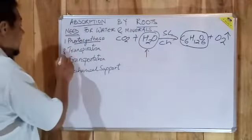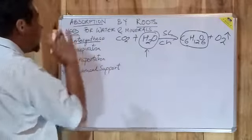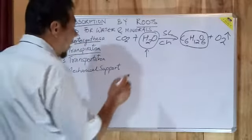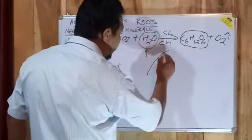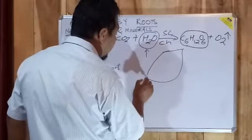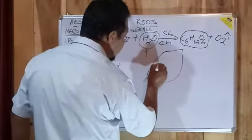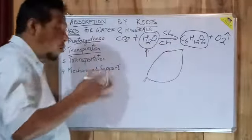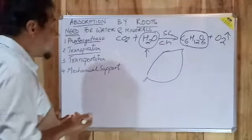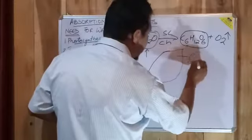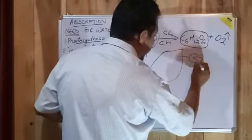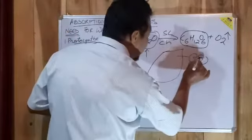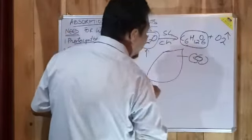Second point is there is a need for absorption of water for transpiration. Now what is transpiration? When you look at the leaf of a plant, when you turn it upside down, you may have seen small dotted lines, dotted marks on the lower side of the leaf. If you magnify these dots, they are nothing but stomatas.